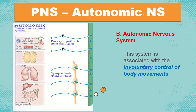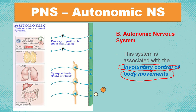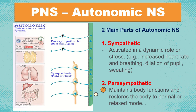We also have the autonomic nervous system. This system involves involuntary control of body movements — like the involuntary muscles of the lungs, liver, and heart. For example, we cannot stop our lungs from functioning or breathing. Under the autonomic nervous system, we have two parts. The sympathetic nervous system is activated in a dynamic role or stress — for example, increased heart rate and breathing, dilation of the pupil, and sweating.